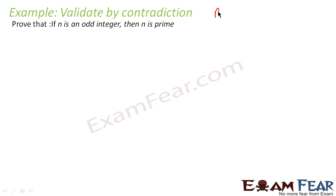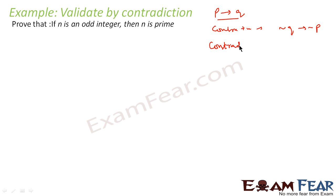For example, if p implies q is a statement, to prove using contrapositive you have to prove that not-q implies not-p. But to prove using contradiction, you assume p and not-q, and then prove that statement to be false. Contrapositive and contradiction are different approaches.